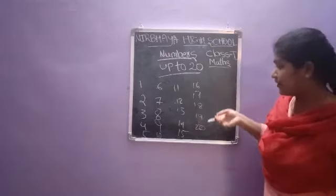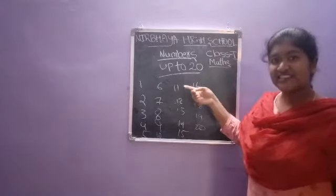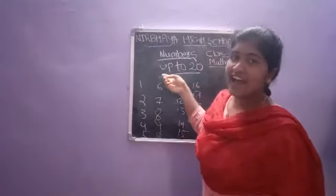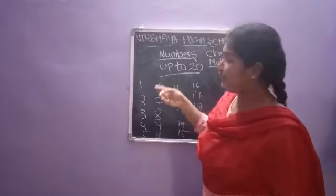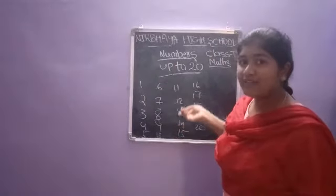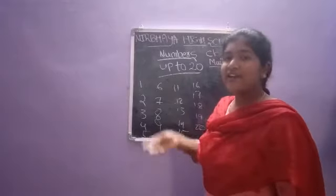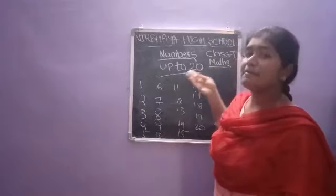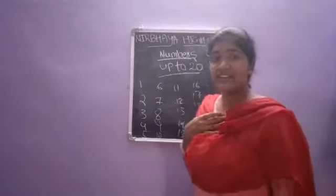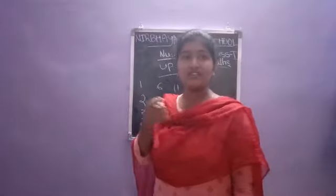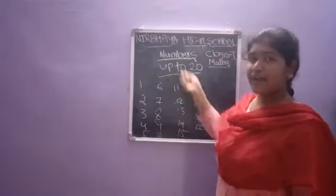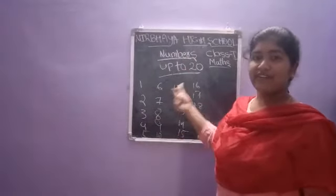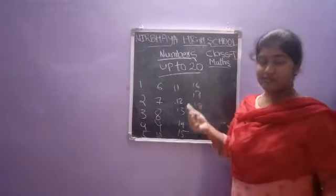Next, we have to count forward and backward. Forward means 1, 2, 3, 4, 5, 6, 7, 8, 9, 10, 11, 12, 13, 14, 15, 16, 17, 18, 19, 20. Backward means: 20, 19, 18, 17, 16, 15, 14, 13, 12, 11, 10, 9, 8, 7, 6, 5, 4, 3, 2, 1. We have to read forward and backward. My reading is complete, so now it is your turn. You have to read forward and backward also.